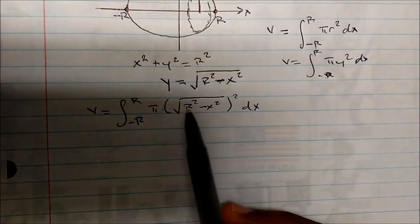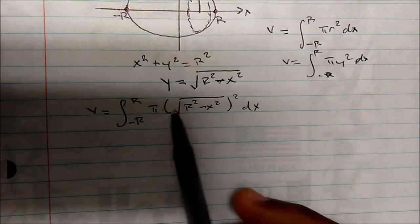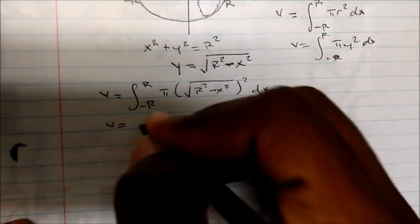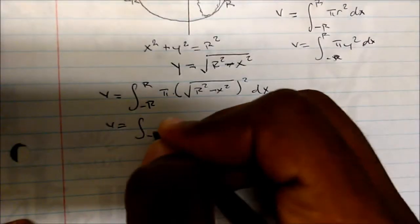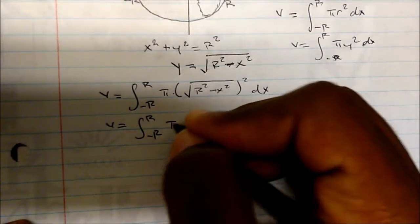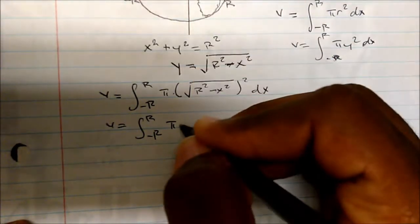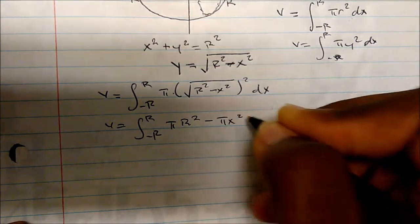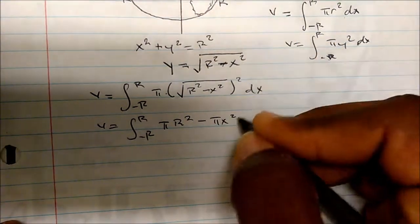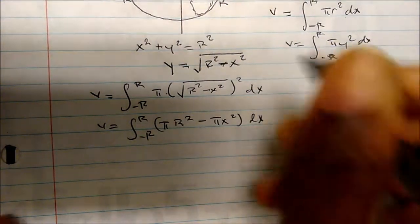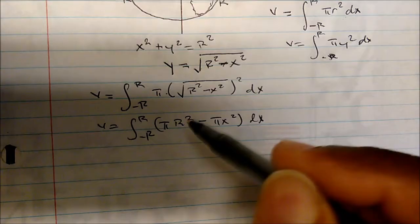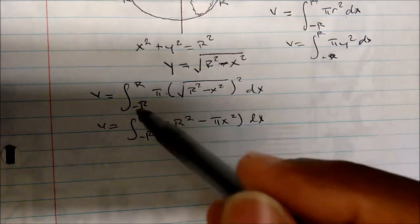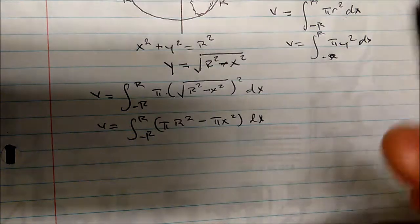We know that the square root and the square cancel. So the volume equals the integral from negative r to r of π r squared minus π x squared. All I did was distribute the π.